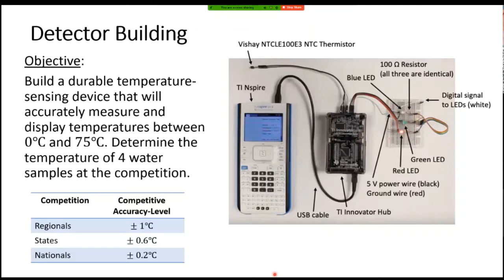So the objective of last year's detector building was to build a temperature sensing device that will accurately measure and display temperatures between 0 and 75 degrees Celsius. And at the competition, they'll give you four samples of water and they'll ask you to measure their temperature and test you on the accuracy. So to be competitive at regionals, you need to be somewhere within one degree Celsius. At states, you need to drop it down to half a degree Celsius. And at nationals, it's within 0.2 degrees Celsius. So it's very precise.